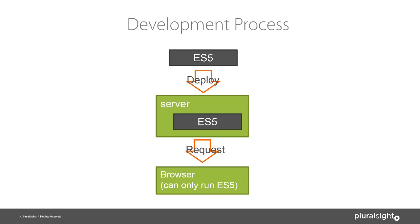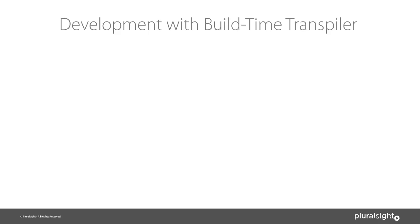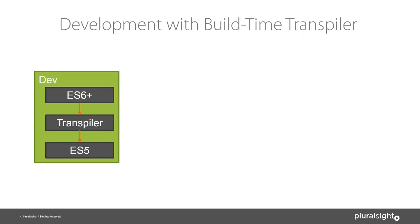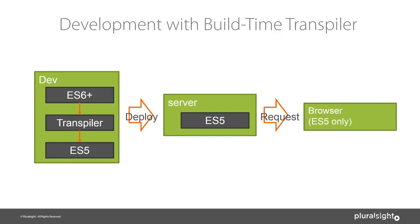There's a new process becoming more popular: development with a build-time transpiler. Instead of authoring in ECMAScript 5, we can author in ES6, ES7, TypeScript, or CoffeeScript. We run our code through a transpiler on our dev box, and out pops ES5 code that can be run on the server. We then deploy that code to the server, the browser requests it and runs it. The benefit is we can use new features in the latest versions of JavaScript or languages like TypeScript.